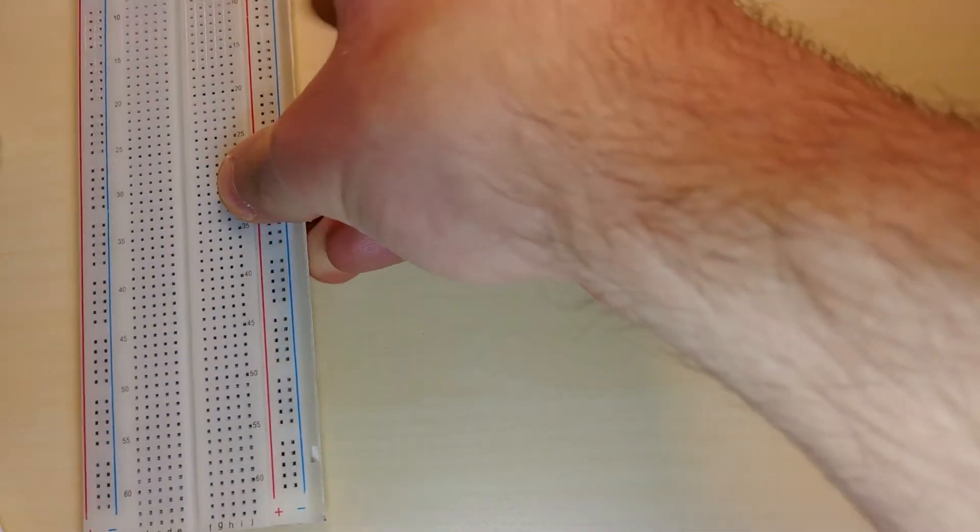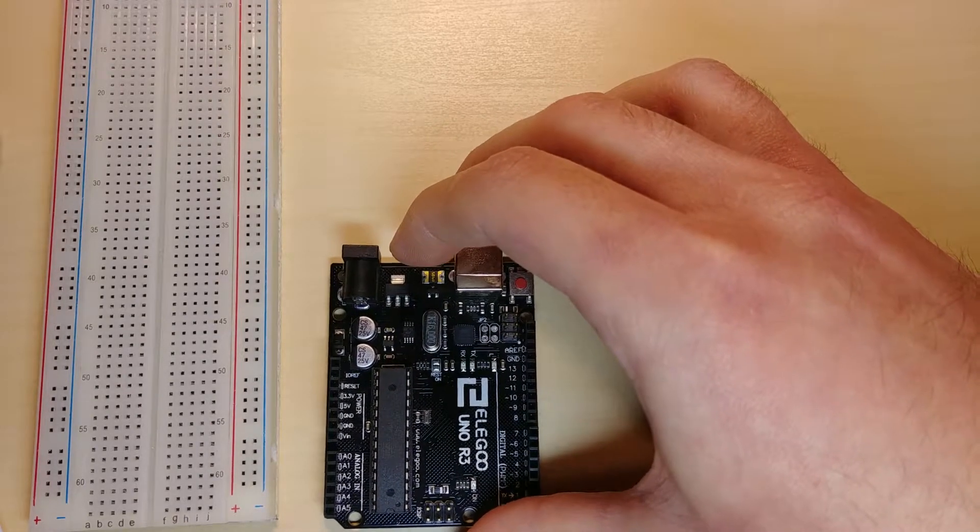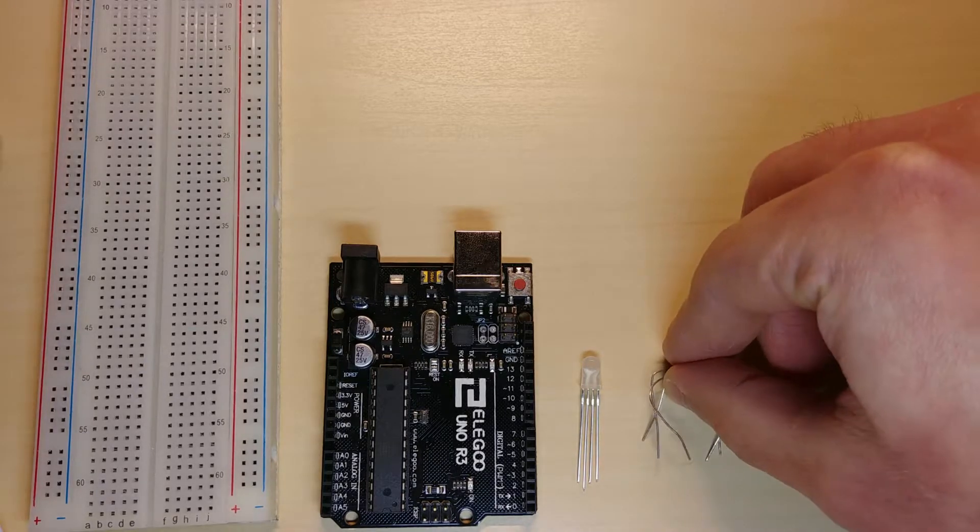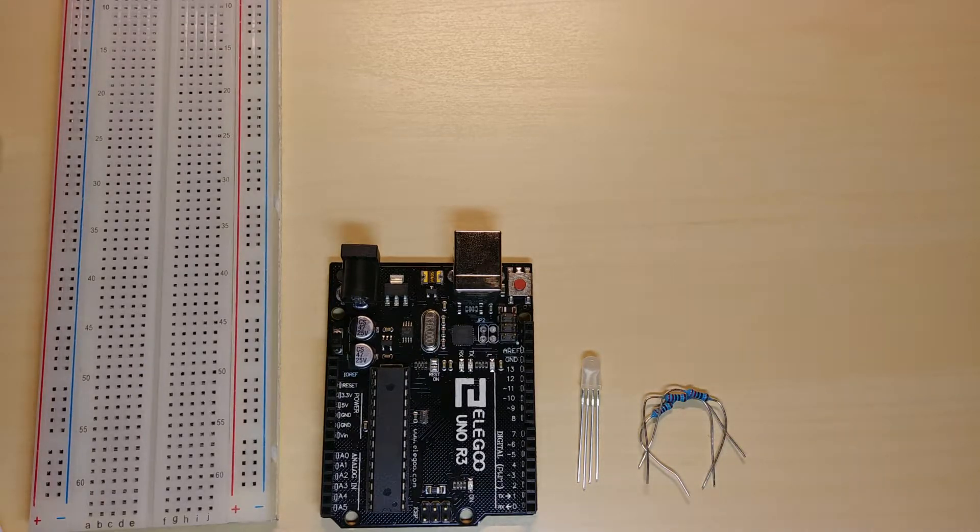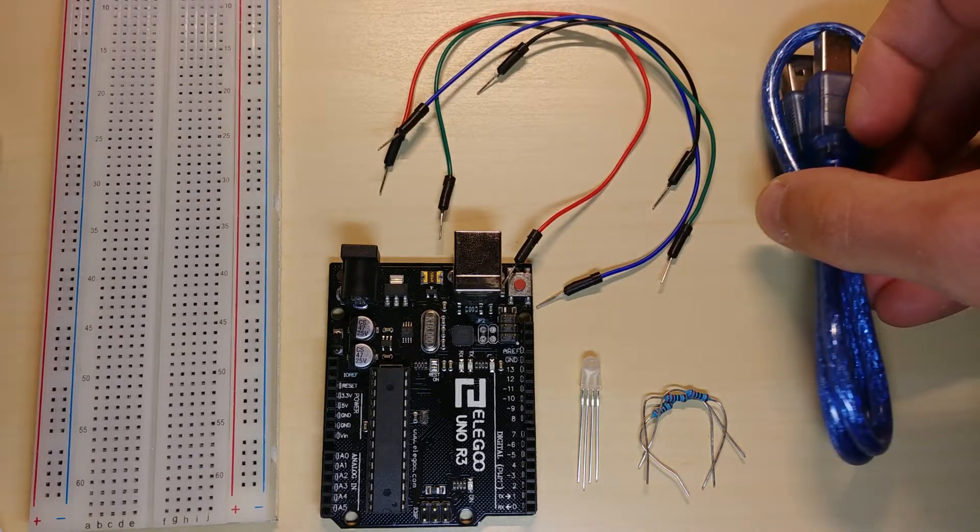For this project we will need a breadboard, an Arduino, an RGB LED, three 220 ohms resistors, four male to male jumper wires and a USB cable.